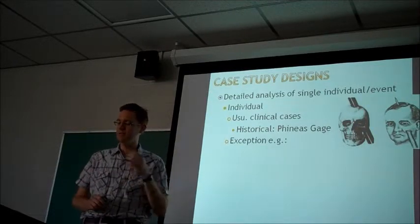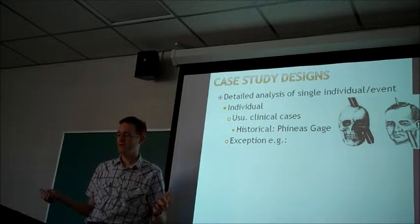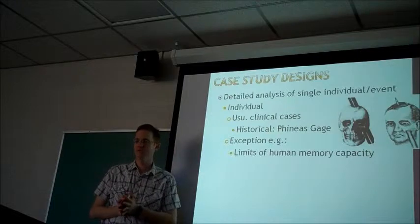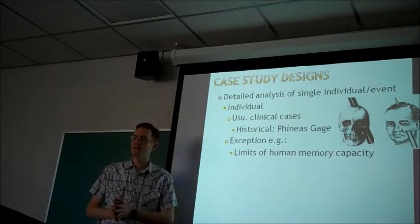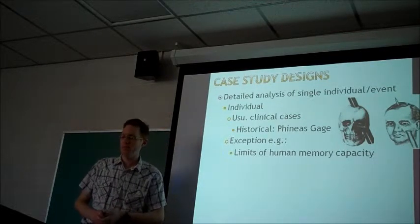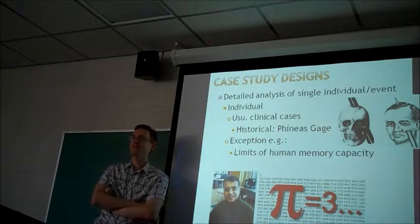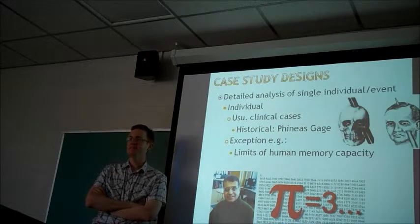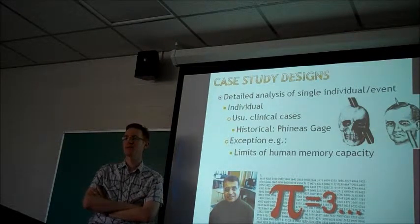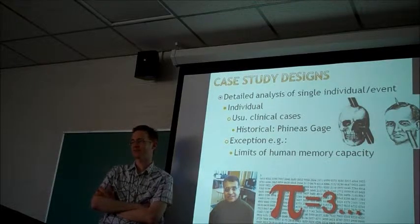One exception to the notion that these are usually clinical cases is studies that look at the limits of human memory capacity. There are some people out there that seem to have this amazing talent to memorize certain information. One of the classic examples is Rajan Madhavan, who around his sixth birthday realized he had this talent for memorizing things really quickly and vast amounts of information. After his birthday party, he went out and memorized the license plates on all the cars in the parking lot.